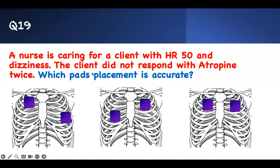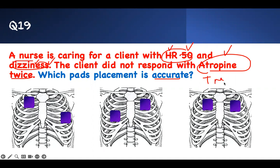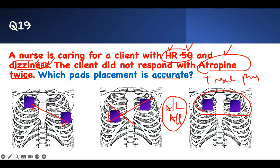Number nineteen: A nurse is caring for a client with a low heart rate, dizziness, and symptomatic bradycardia. Atropine did not help twice. Where would you place your pads? You need a transcutaneous pacemaker. The best placements are anterior-lateral or anterior-posterior. The anterior-lateral position is correct. Alternatively, one pad anterior and one posterior is also perfect.